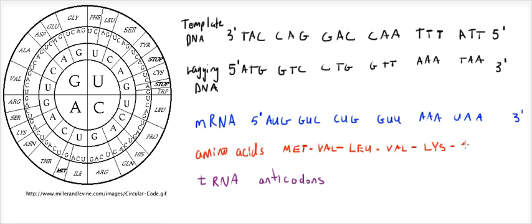And that's one of the three different ways to get a stop codon, and these are what end translation. So once you hit a stop codon, translation stops and your polypeptide is done — your protein is done. So again, they'll always start with Met, the start codon, and they'll always stop with a stop codon. Now I'm just asking for the tRNA anticodon — what are the anticodons in the tRNAs that bring along these amino acids?